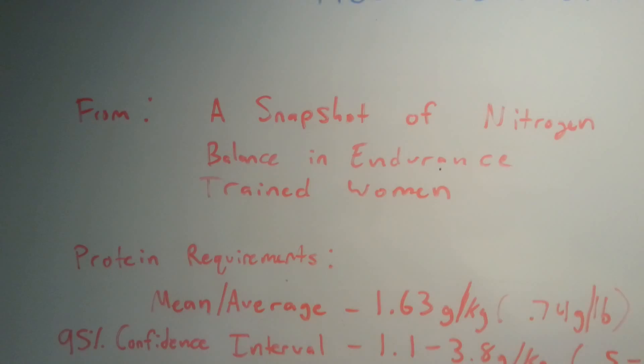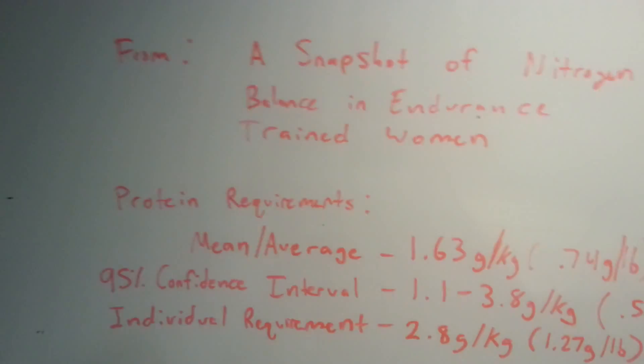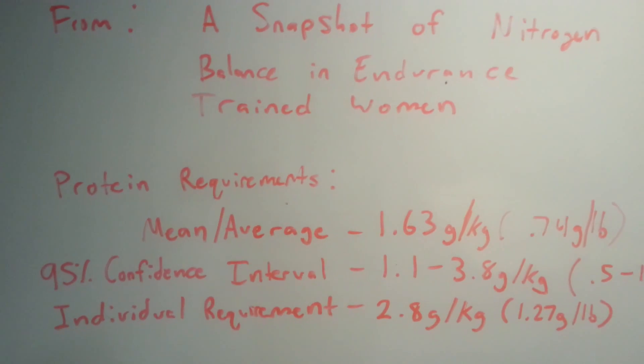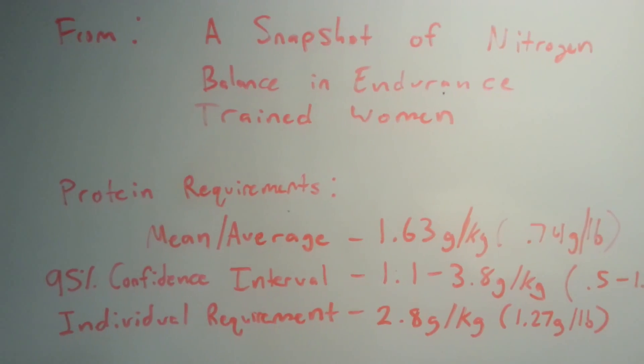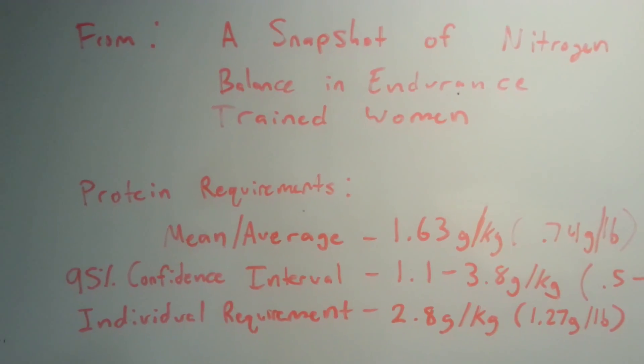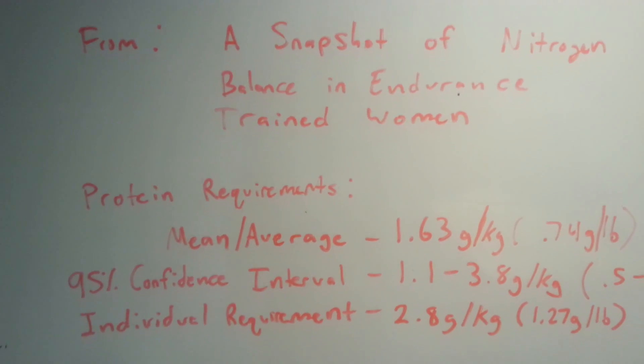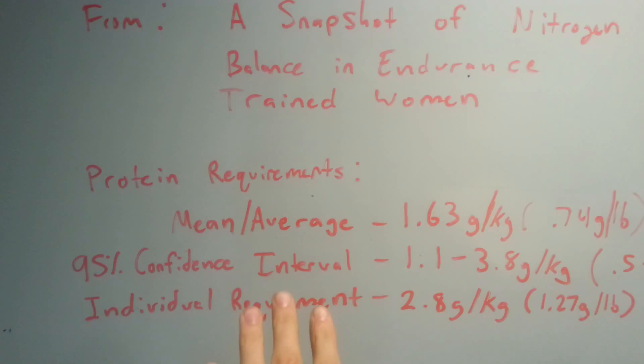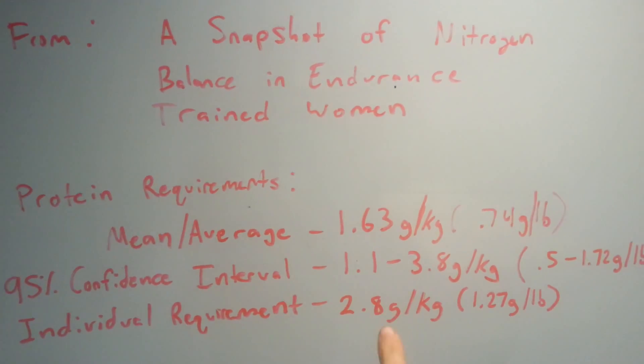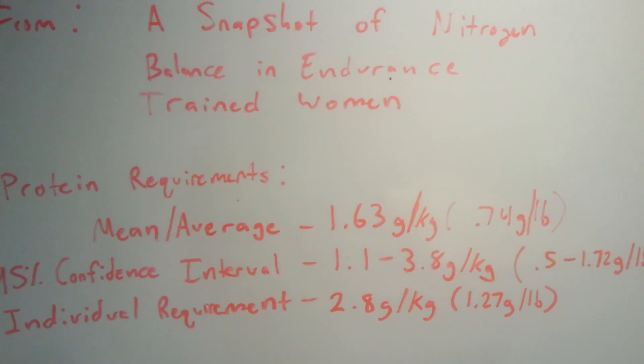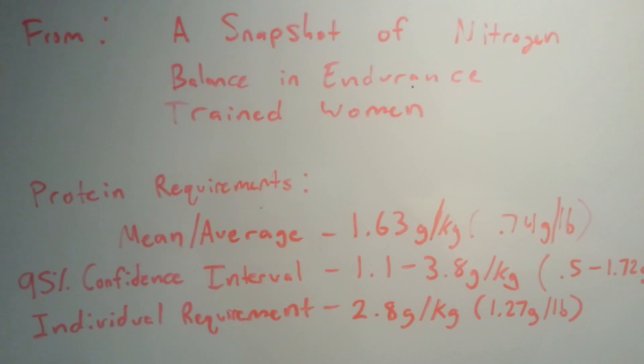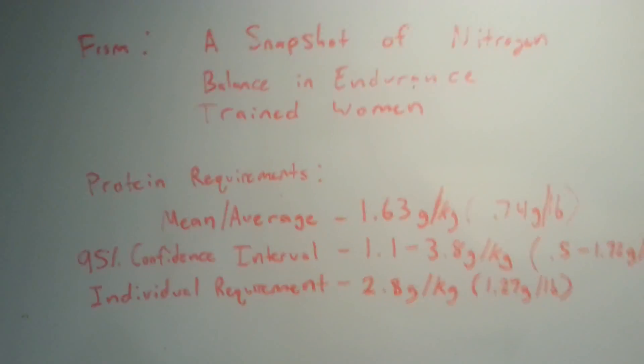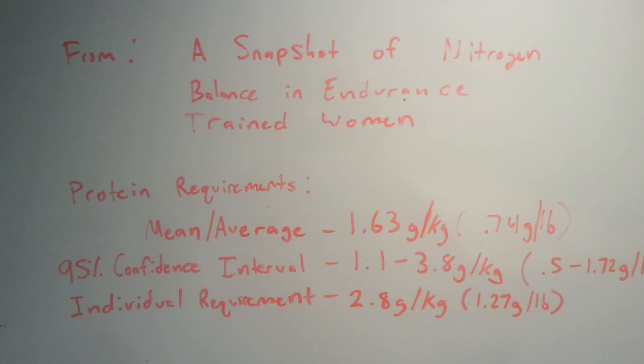An extremely important thing that this study did, if you read the full text, is they reported an individual requirement of one of the athletes. This is not the average, this is not the norm, and one might even argue it's an outlier. However, there was one specific individual among all the people in this study who had - her requirement just on her own - was 2.8 grams per kilogram of protein. This is extremely high.